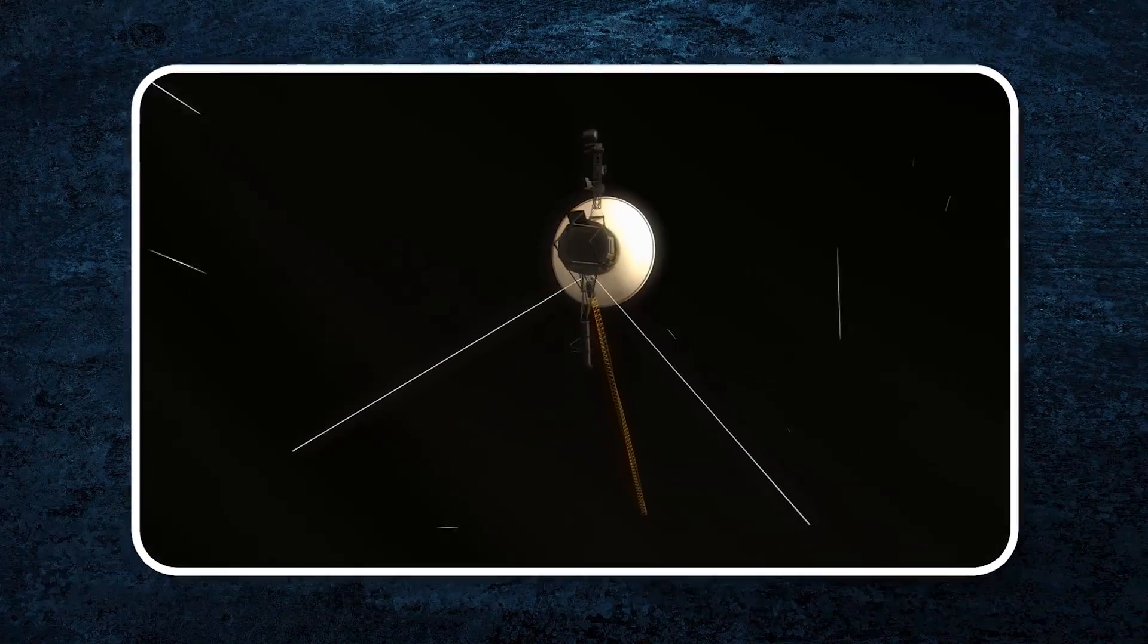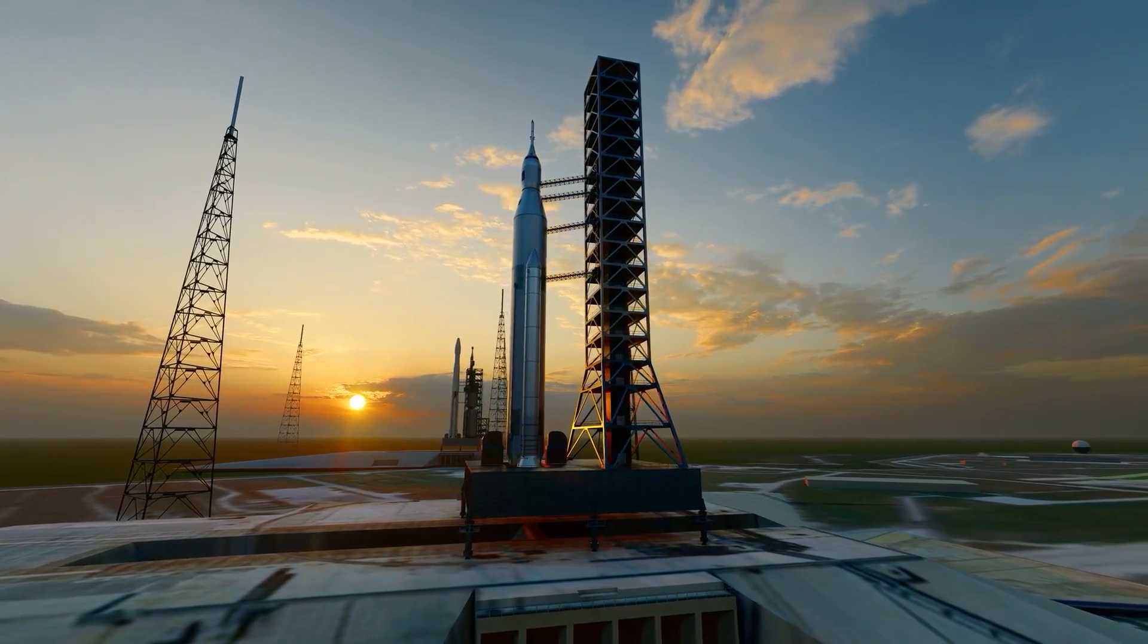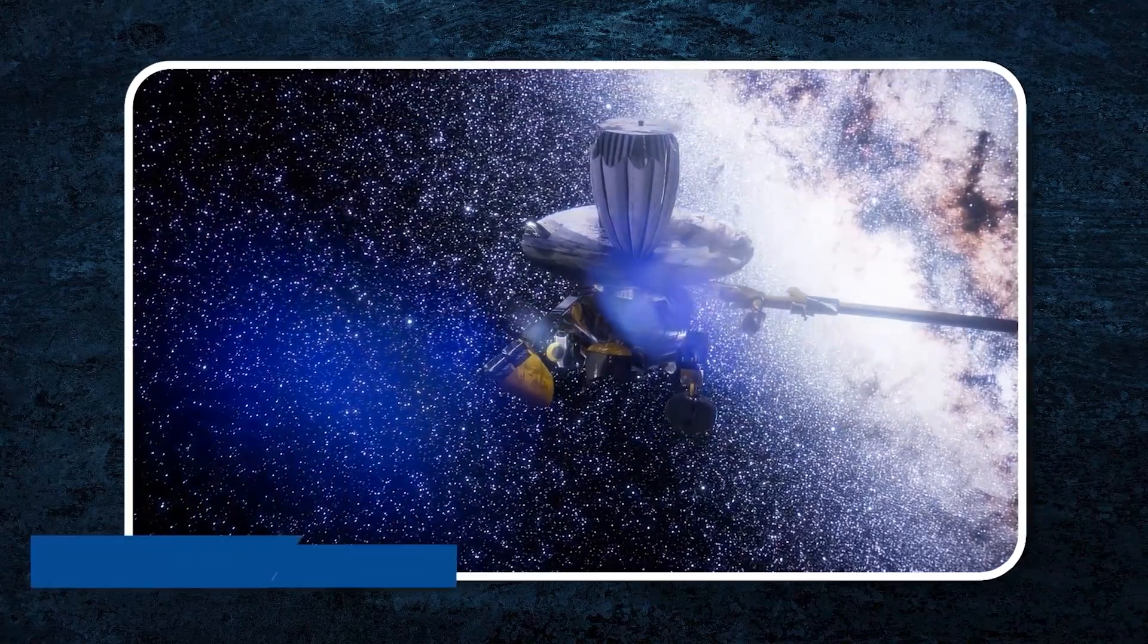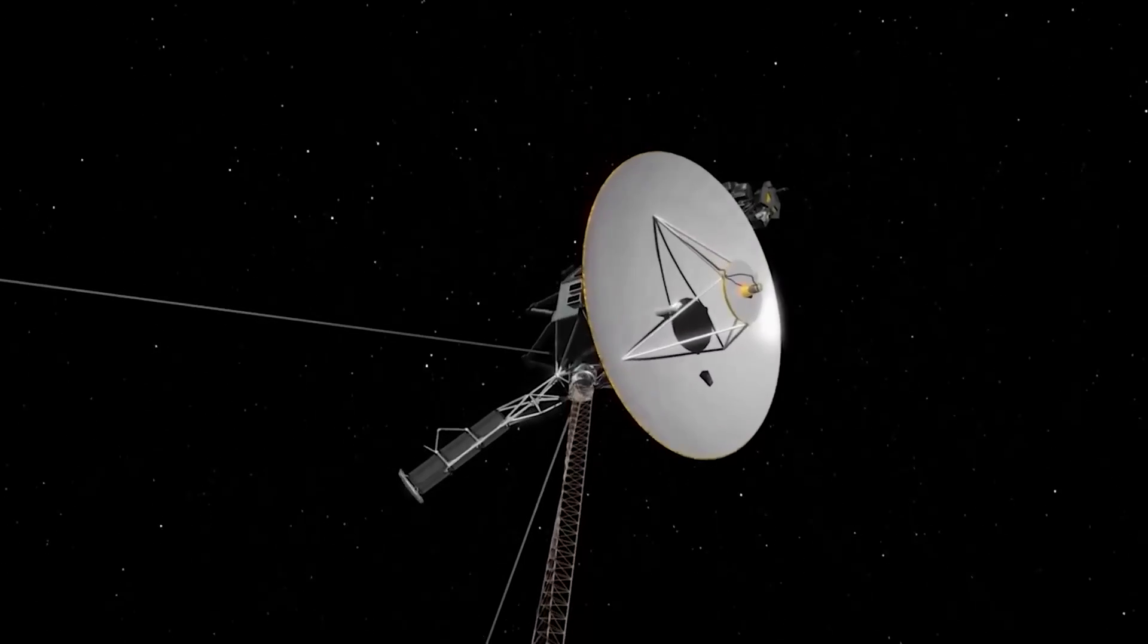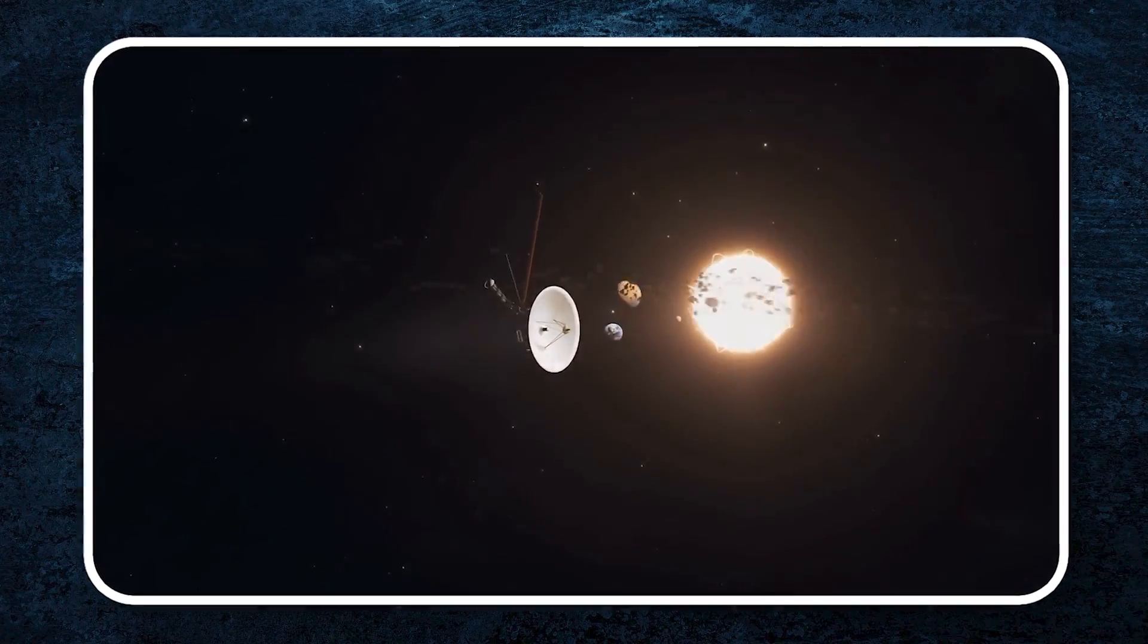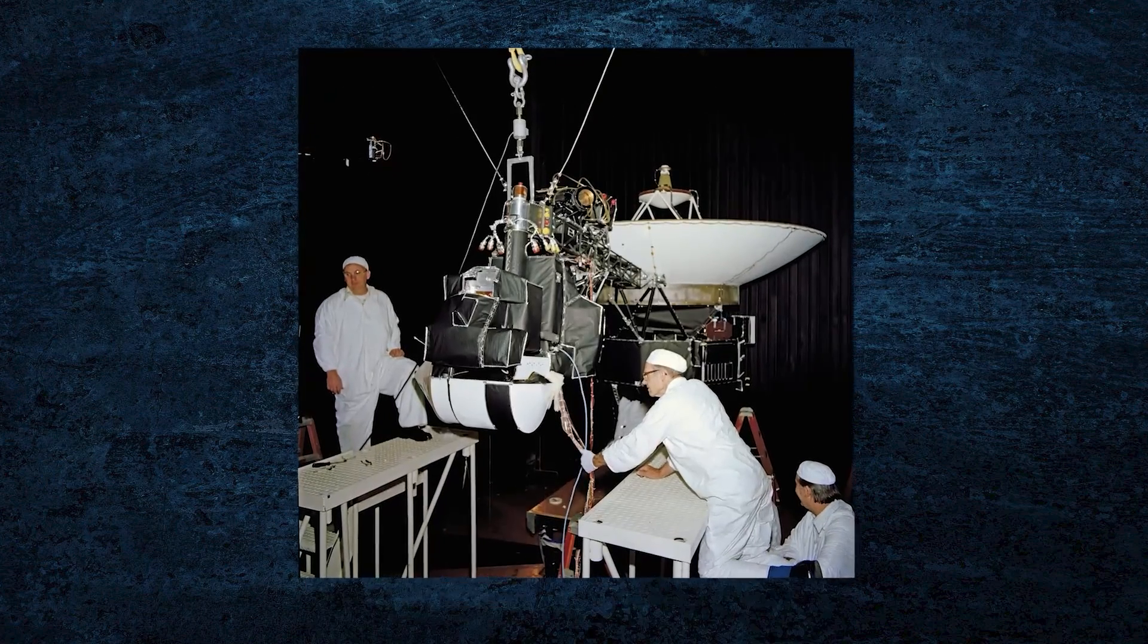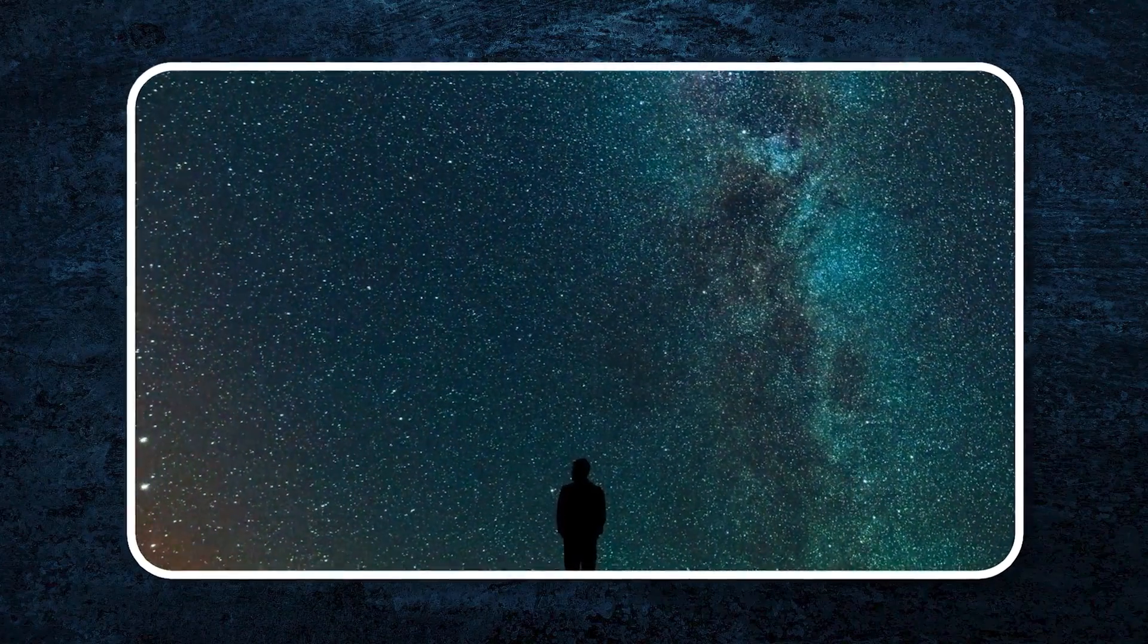While these questions echoed unanswered, Voyager 1, another iconic symbol of our reach into the cosmos, was also sending signals. Launched in 1977, the same year the WOW signal was received, Voyager 1 had been cruising through space, heading towards the edge of our solar system. It had long since completed its primary mission of photographing Jupiter and Saturn and was now venturing beyond into the uncharted territory of interstellar space. Voyager 1 carries with it a golden record, a time capsule filled with greetings in 55 languages, images from Earth, and sounds like waves, laughter, and music.